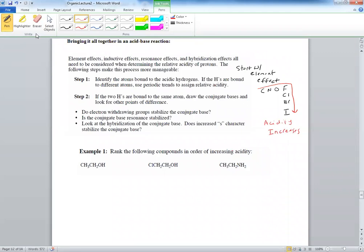So then you have to ask yourself a few questions. Number one is look at the hydrogen. Identify the atoms bound to the acidic hydrogen. If the hydrogens are bound to different atoms, use the periodic trends to assign relative acidity. So again, look at the electronegativity. Where is the hydrogen attached to? Is it attached to an oxygen versus a nitrogen?